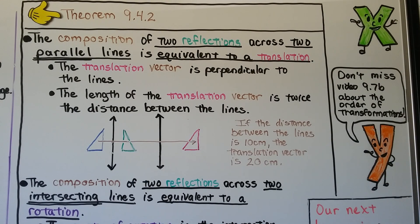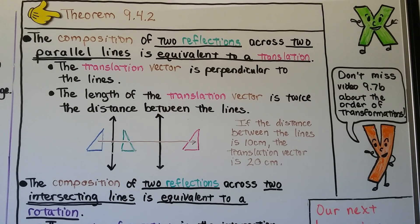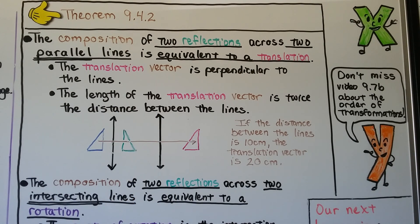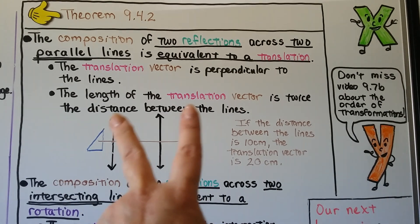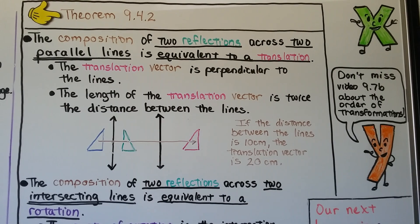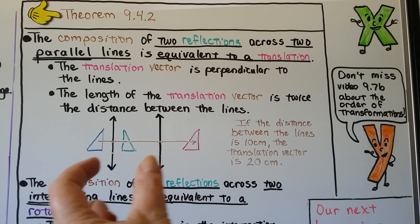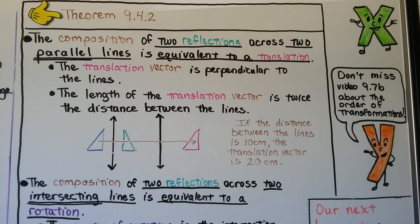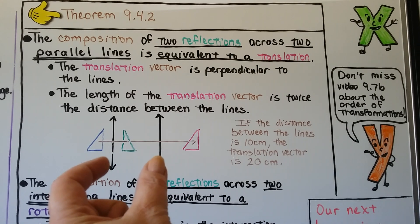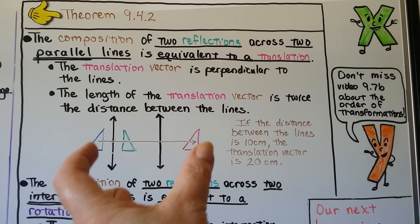Now we're at Theorem 9.4.2: the composition of two reflections across two parallel lines is equivalent to a translation. The translation vector is perpendicular to those lines, and the length of the translation vector is twice the distance between the lines. So if the distance between the lines is 10 cm, then the translation vector is 20 cm.